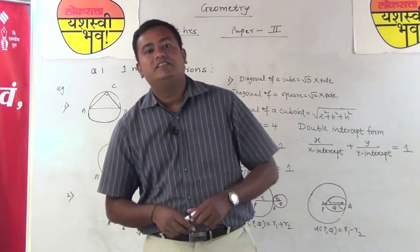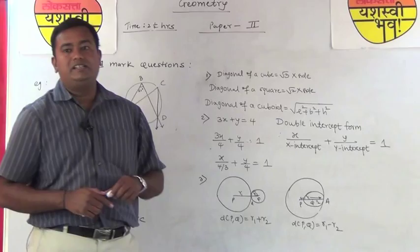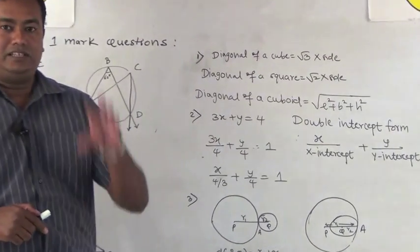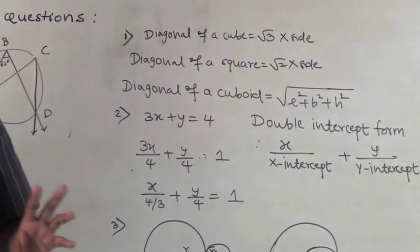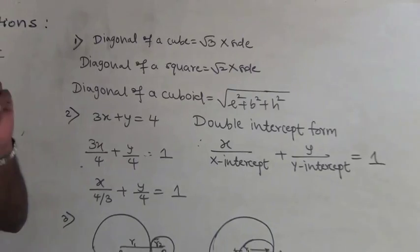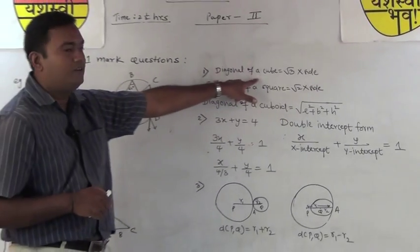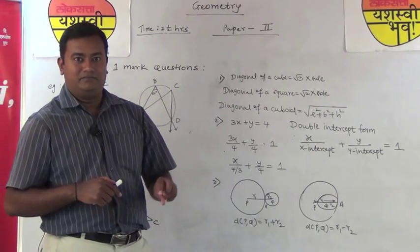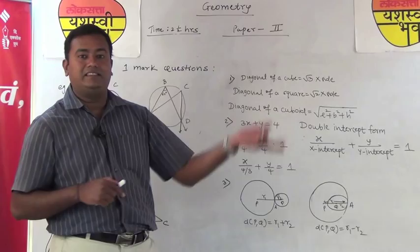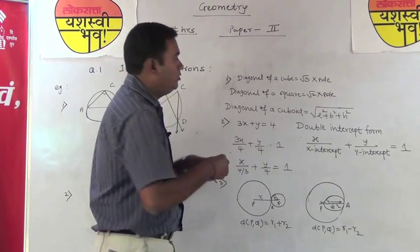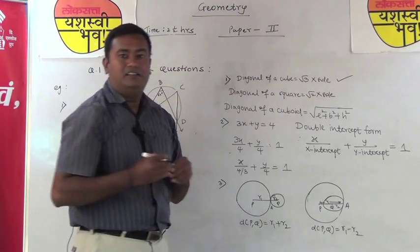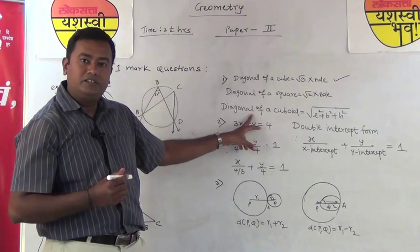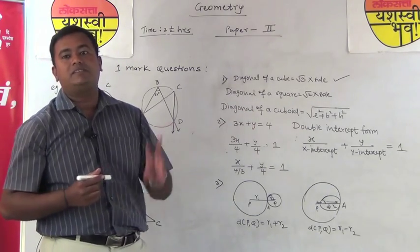Now, going back to the prelim paper: question 1 asks to find the diagonal of a cube if the side is given. In the mensuration chapter, learn all formulas, including those given within the lesson. The formula for the diagonal of a cube is √3 × side. Don't confuse it with the diagonal of a square, which is √2 × side. If you use the wrong formula, the answer will be wrong. Similarly, the diagonal of a cuboid is √(a² + b² + h²).